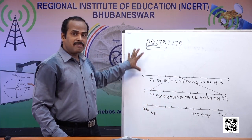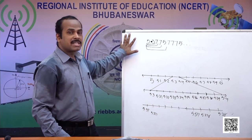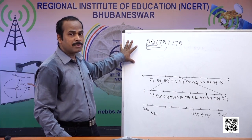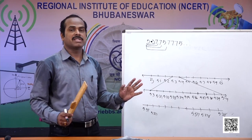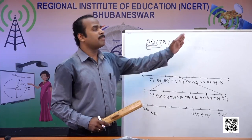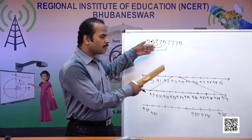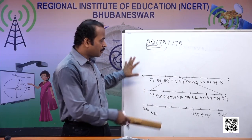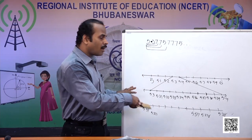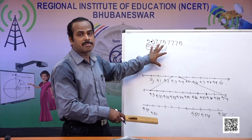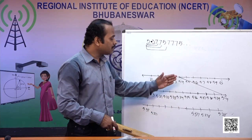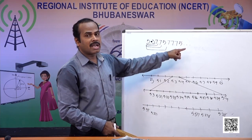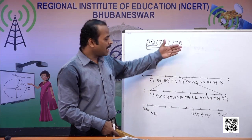The successive magnification method for representing irrational numbers on the number line will help us find up to certain decimal places. We can go further, but it will be a time-consuming process. The concept is that we can extend this number line to any extent to express these types of numbers. Adding more number lines and more magnifications, we can extend the division points and show through this method.